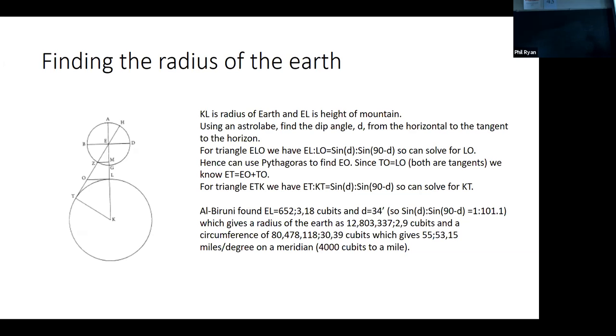So we know the distance from the top of the mountain to the horizon. And then we do stuff with this triangle here. So we have ET over KT is again, sine D over sine 90 minus D. So we can solve for KT. So all in theory, all this is doable.